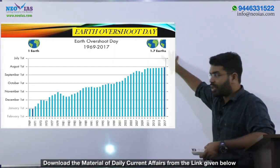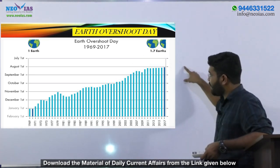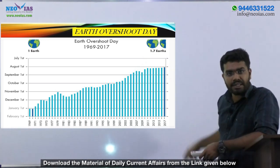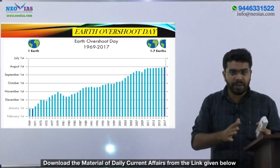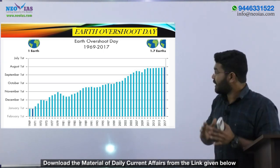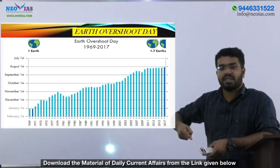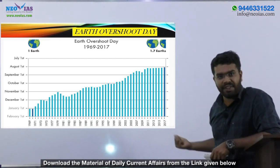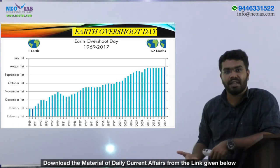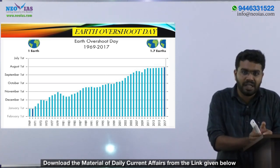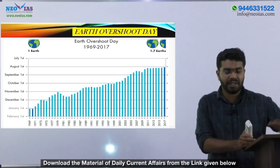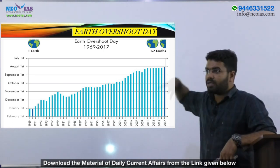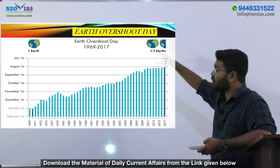Looking at the graph from 1969 to 2017, in 2017 we reached 1.7 Earths — meaning the entire human population used resources 1.7 times what the world produced. If 100 units were produced in 2017, we used 170 units. This leads to resource depletion and critical resource disparity and distribution issues. That is what Earth Overshoot Day is all about.